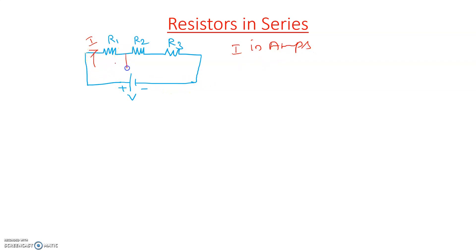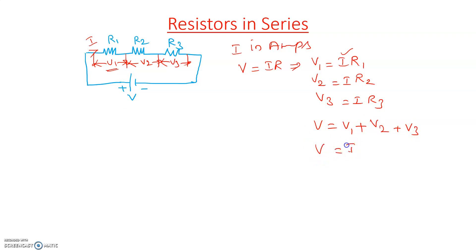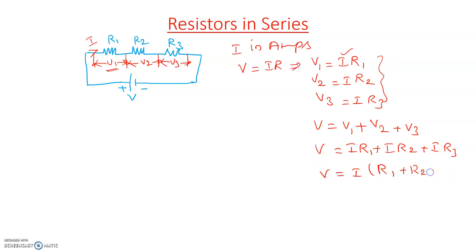What about the voltage? The voltage across each resistor will be different. Let V1 be the voltage across R1, V2 across R2, and V3 across R3. According to Ohm's law V=IR, we can write V1 = I×R1, V2 = I×R2, and V3 = I×R3. The applied voltage V equals the summation of voltages across each resistor: V = V1 + V2 + V3 = I(R1 + R2 + R3).